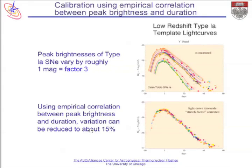It turns out that supernovae with known distances—nearby supernovae where we know how far away they are—show that if they are dimmer at peak, they decline more rapidly. So there's a correlation: if they're brighter they decline more slowly; if fainter, they decline more quickly. You can use that correlation to bring them to a standard template, and then the scatter is more like 15% instead of a factor of three.